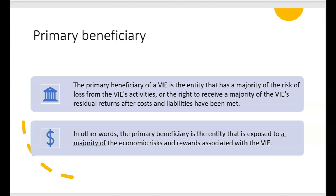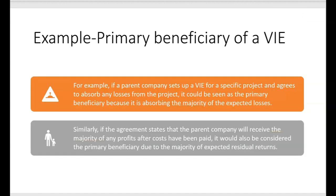The primary beneficiary of a VIE is the entity that has a majority of the risk of loss from the VIE's activities, or they have the right to receive a majority of the VIE's residual returns after costs and liabilities have been met. In other words, the primary beneficiary is the entity exposed to a majority of the economic risks and rewards associated with the VIE, but not necessarily the largest stockholder. For example, if a parent company sets up a VIE for a specific project and agrees to absorb any losses, it could be seen as the primary beneficiary.